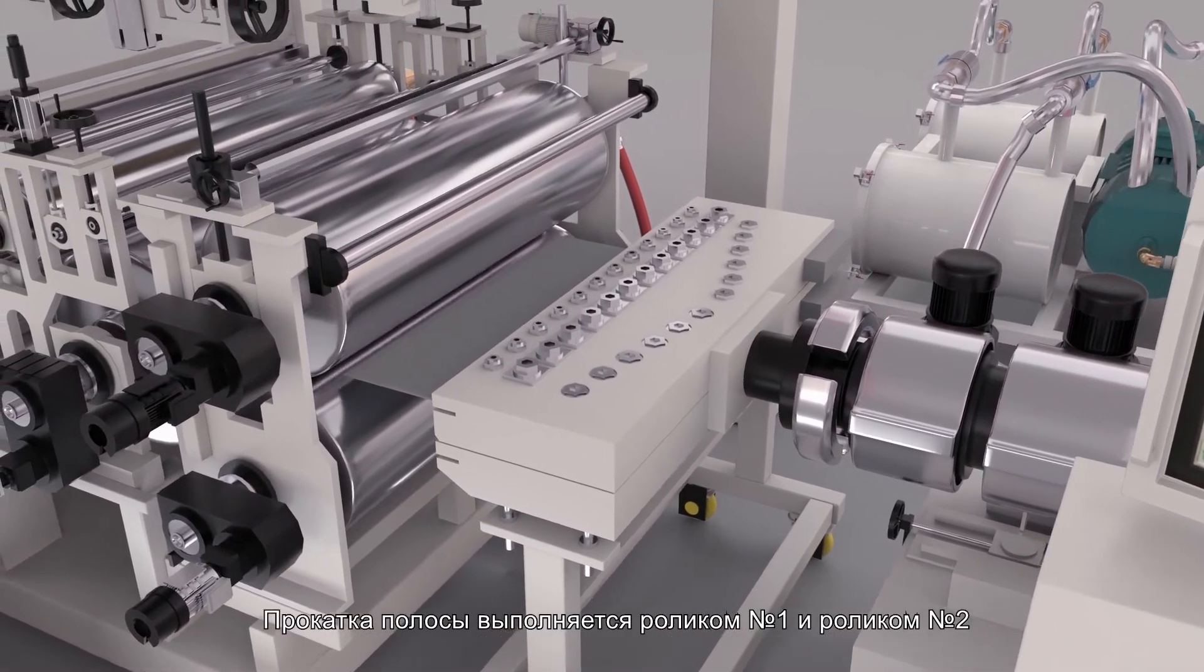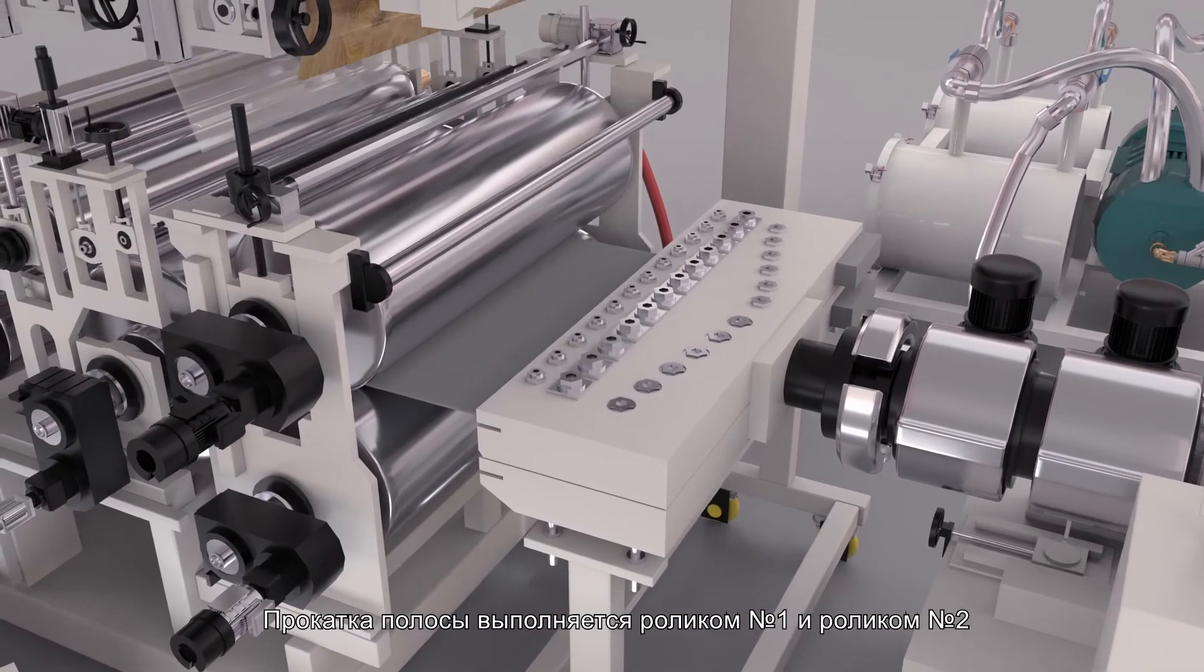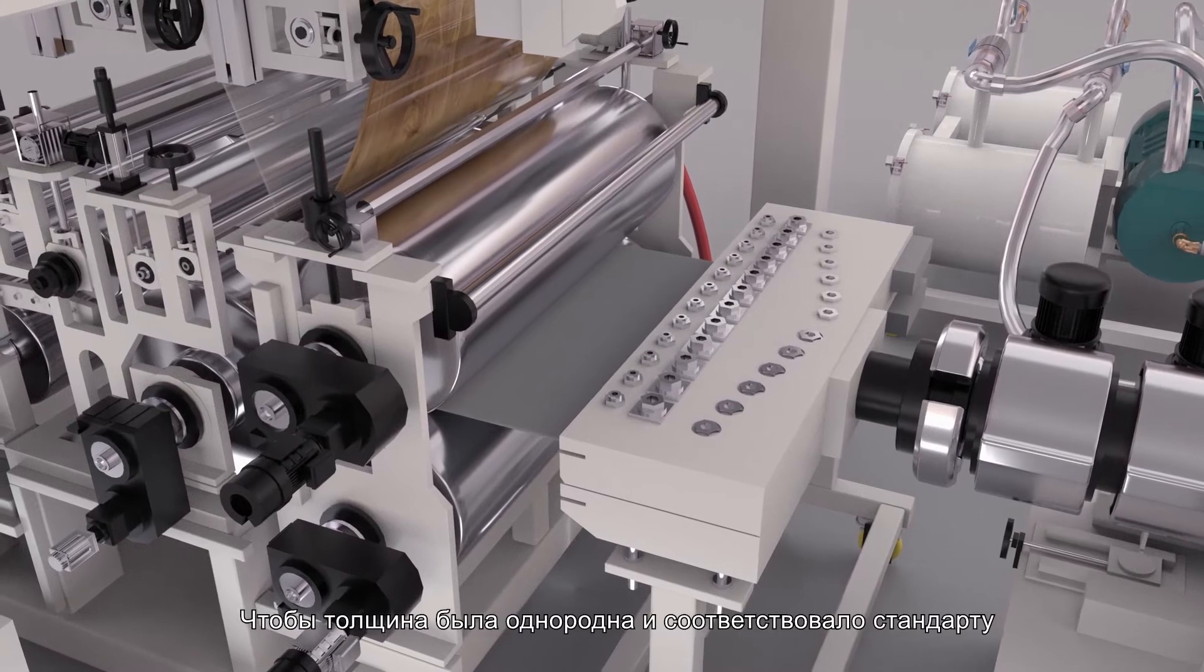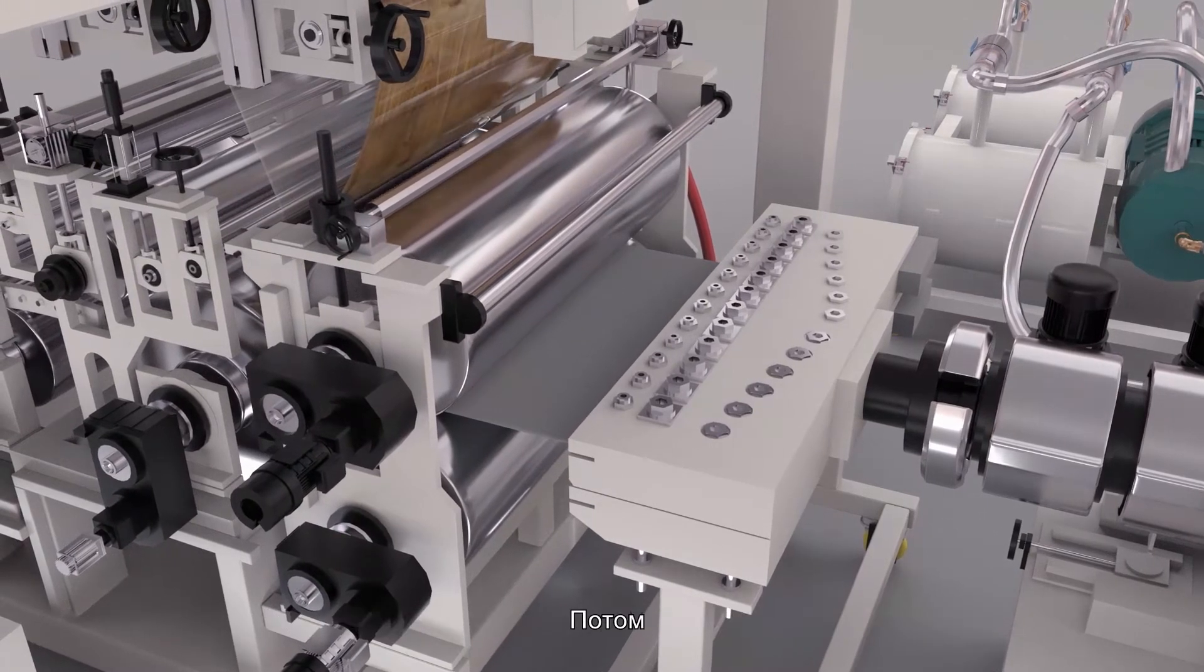The material strap comes out of the tooling opening and then enters the 5-roller calendering system. Firstly, it is rolled by number 1 roller and number 2 roller to ensure that the thickness is uniform and up to the standard.